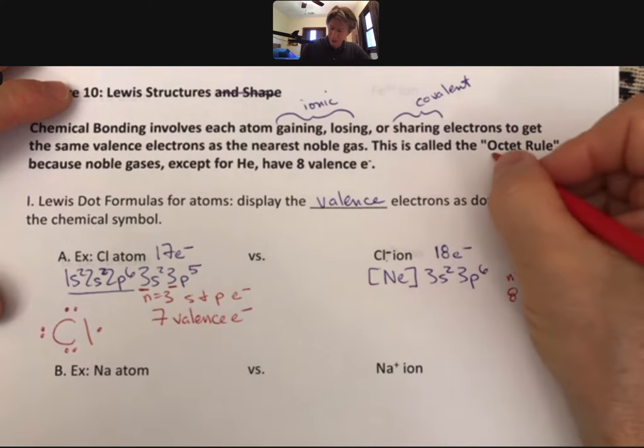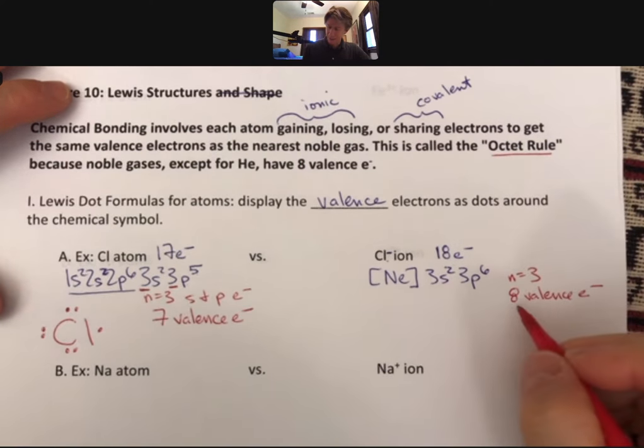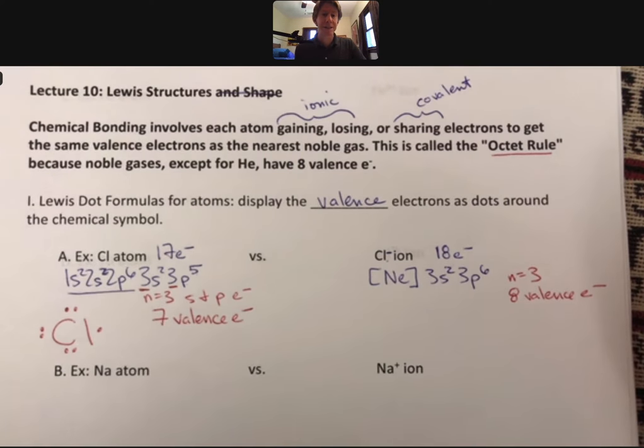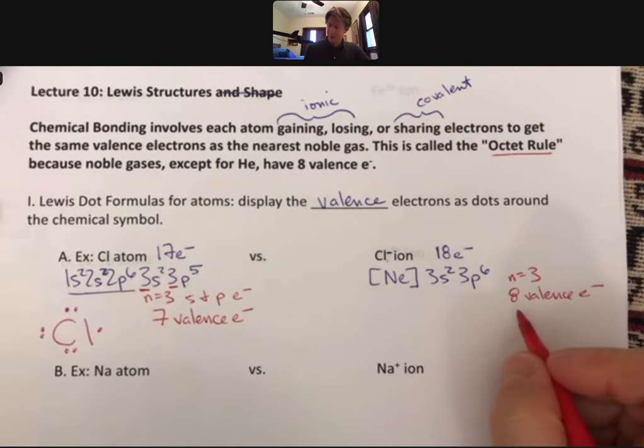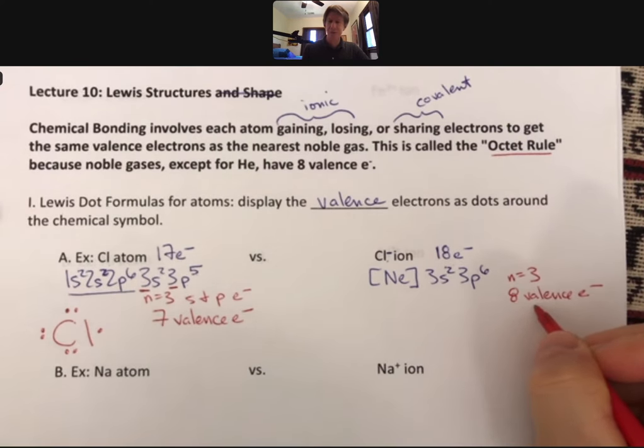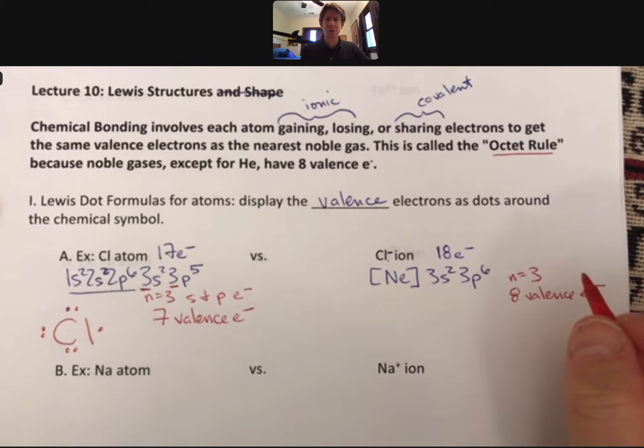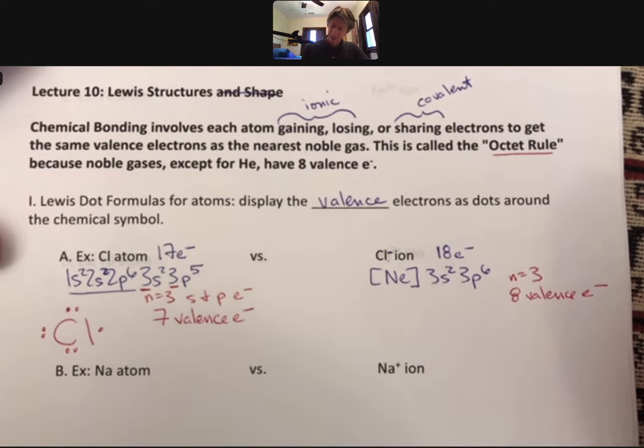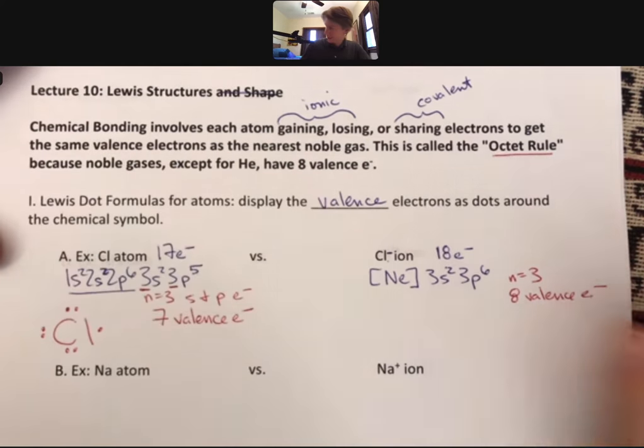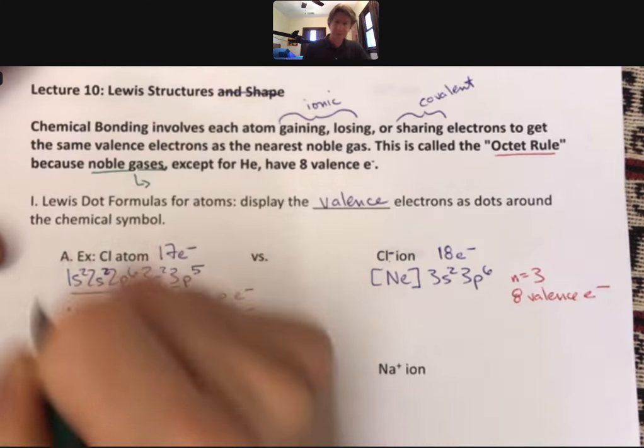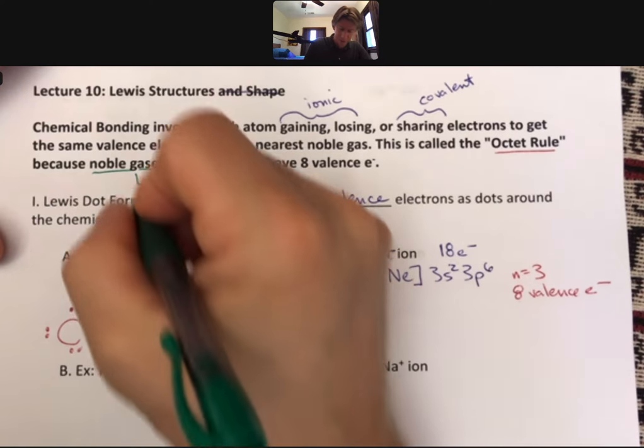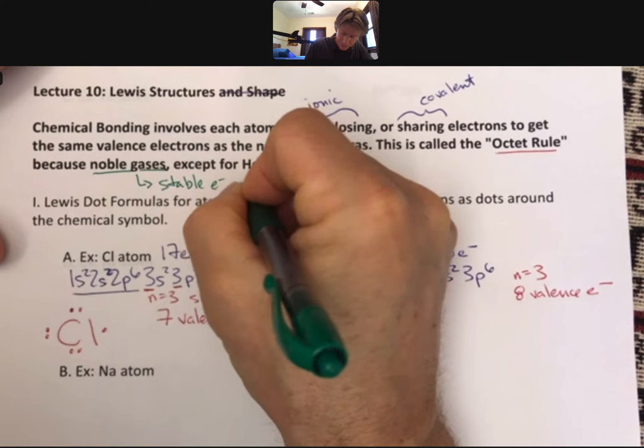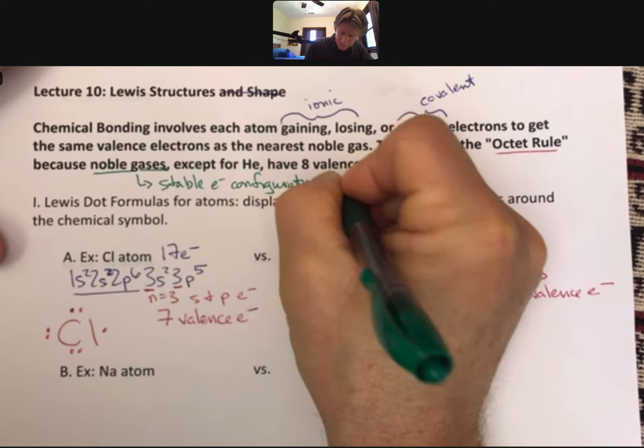That's what we mean by the octet rule. The octet rule says that chloride is the typical ion that we see for chlorine. Why does it form? Now we have a little more understanding because it forms because of the octet rule saying that each atom wants 8 valence electrons. The octet rule rules everything we're going to be doing for the next couple of weeks.